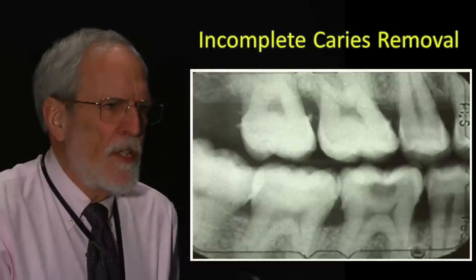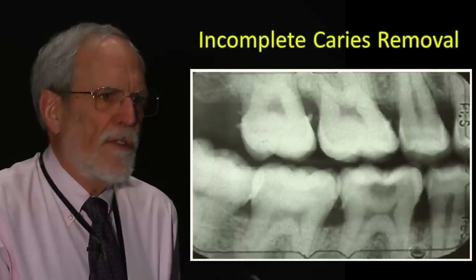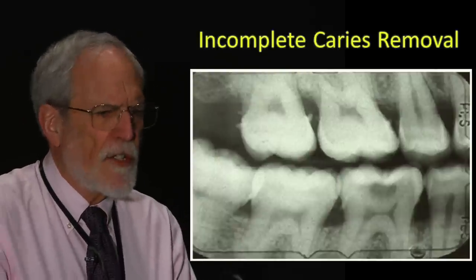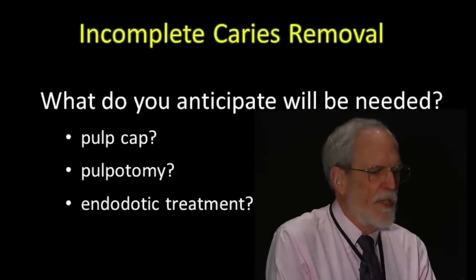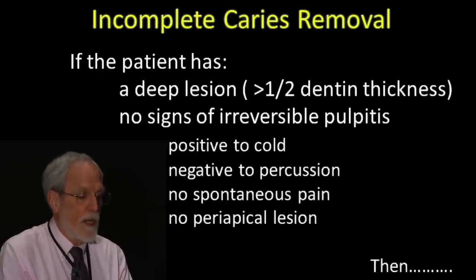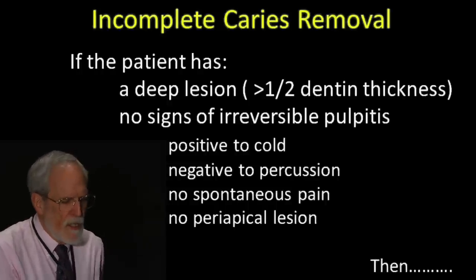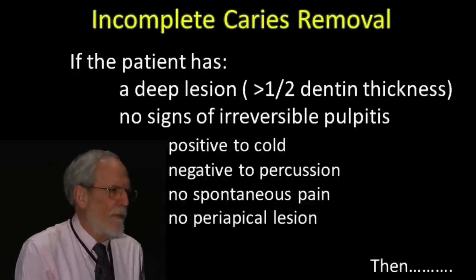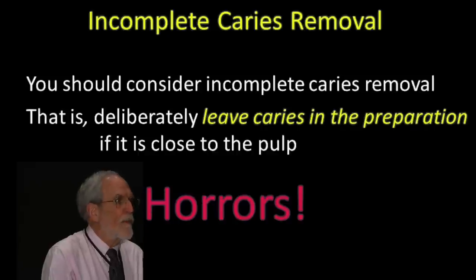I want to bring you a state of the science update on incomplete caries removal, and I want to start by showing this radiograph. Please ignore the calculus hanging off every tooth and let's talk about tooth number 30. If you saw this radiograph associated with a patient in your chair, you might start anticipating a pulp cap, a pulpotomy, or perhaps endodontic treatment. But if the patient has a deep lesion — one half the dentin thickness or greater — with no signs of irreversible pulpitis, positive to cold test, negative to percussion, no spontaneous pain, and no periapical lesion, then the evidence suggests you ought to consider incomplete caries removal.